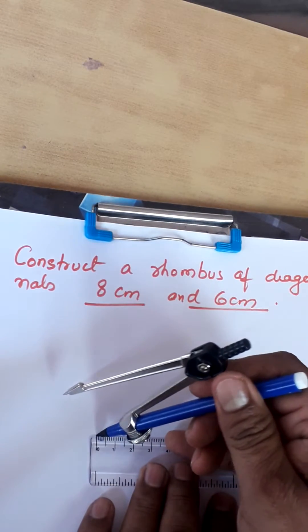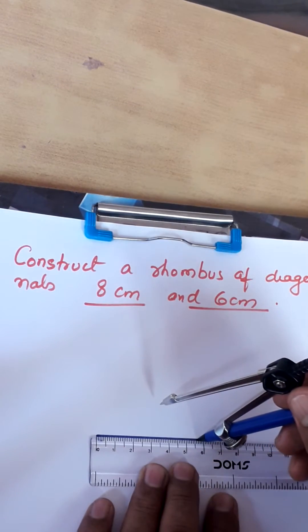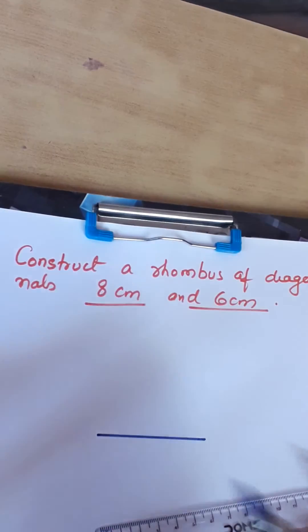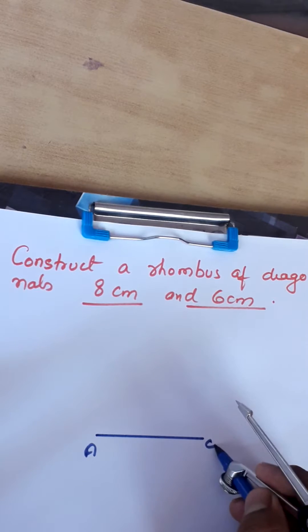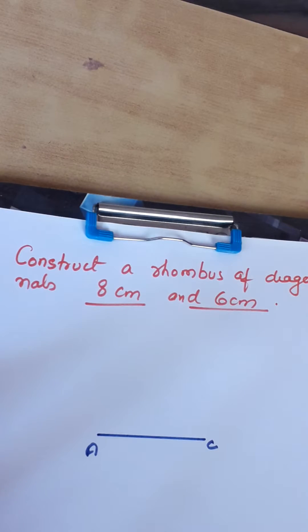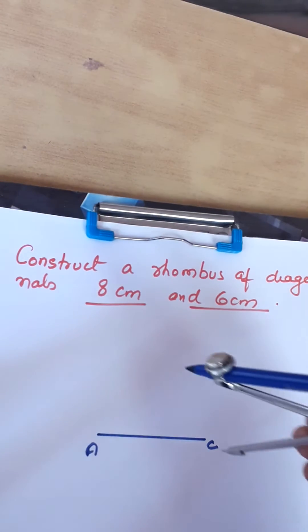We take 6 centimeter. We name it as AC. Now we draw the perpendicular bisector of this line segment AC.